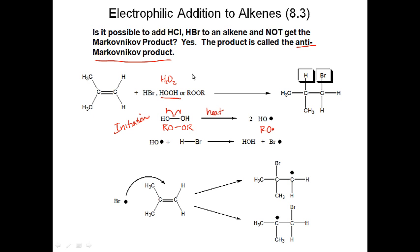Then a hydroxyl radical reacts with an HBr molecule: it abstracts the hydrogen from HBr, breaking the H-Br bond, to give water and a bromine atom. There's the initiation step and then a sort of secondary initiation step — it's not really a propagation step.